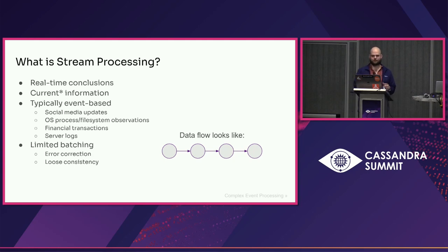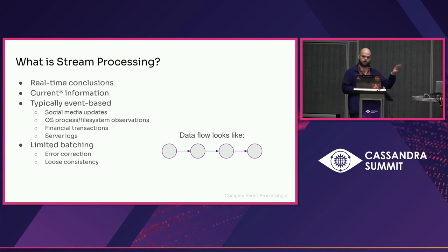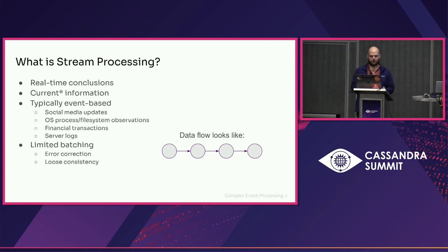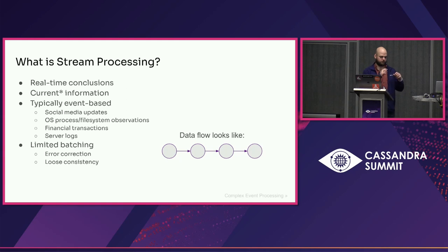So, what is stream processing? Stream processing is a kind of data-oriented development where you're typically trying to draw real-time conclusions from current information. I have a little asterisk on 'current' because current can mean a few things. It can mean real-time. It can mean this happened two minutes ago and I want to react to it. It can mean this happened 14 milliseconds ago and I want to react to it. Or it can mean current with respect to reading a big pool of data and being focused on the head of that pool, the latest thing I've read.